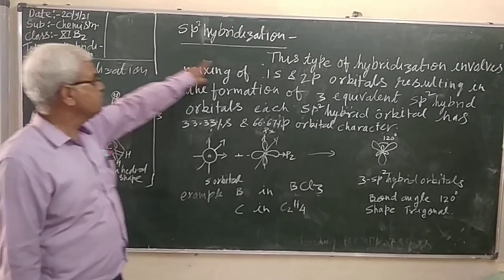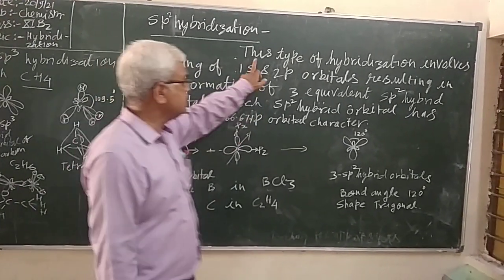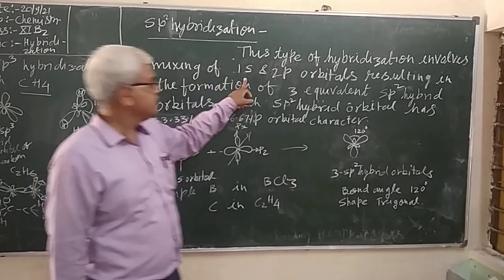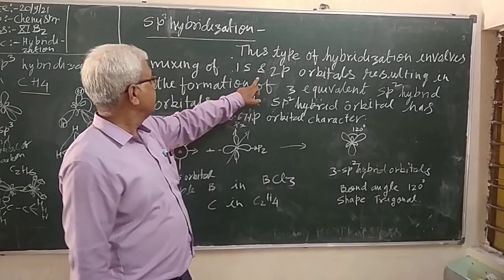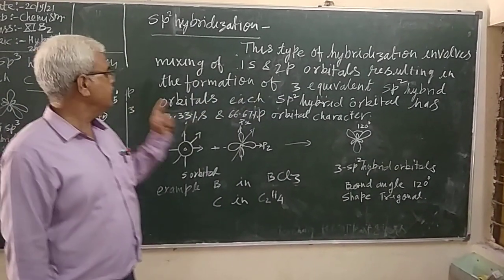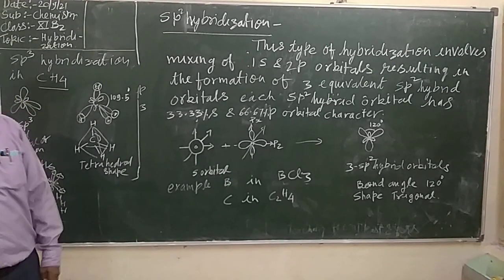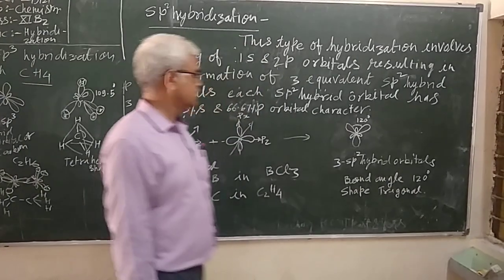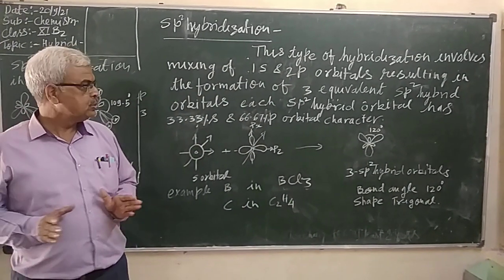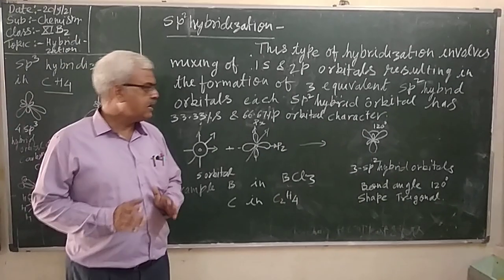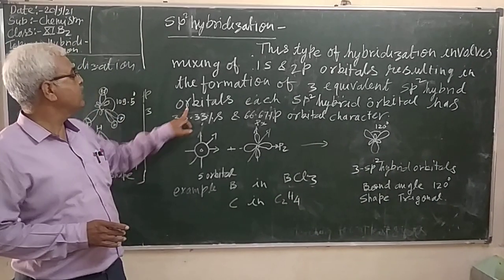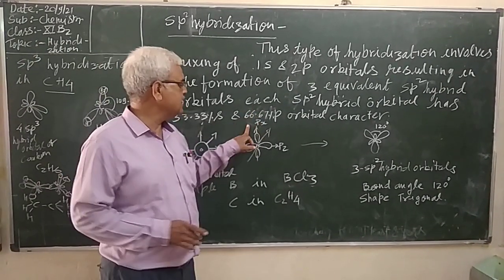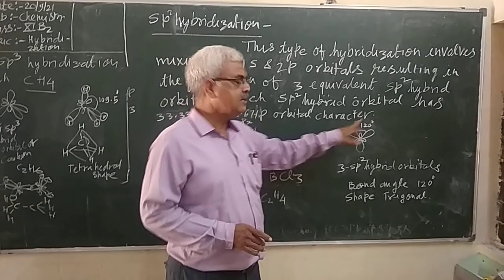Today we will discuss SP2 hybridization. This type of hybridization involves mixing of 1S and 2P orbitals resulting in the formation of 3 equivalent SP2 hybrid orbitals. Each SP2 hybrid orbital has 33.33% S and 66.67% P orbital character.